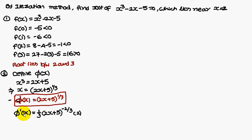φ'(x) is 1/3 times (2x plus 5) to the power minus 2/3, times 2, the differentiation of 2x plus 5.